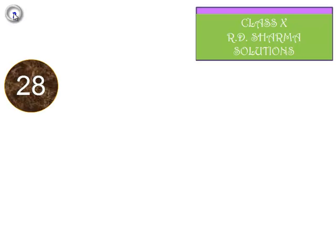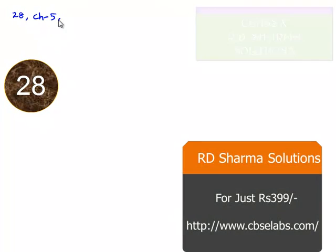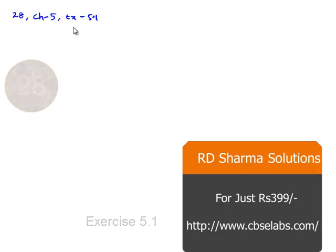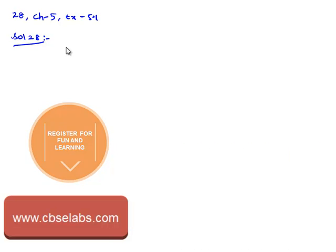Now, let us find the solution for problem number 28, chapter number 5, exercise 5.1. The question given is that sin theta is equal to a by b, and we are asked to find secant theta plus tan theta in terms of a and b.